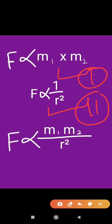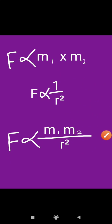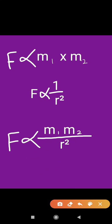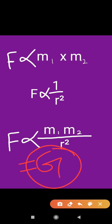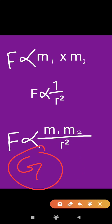When we combine equation one and two, we get F is proportional to M1·M2 upon R². As we know, whenever we remove a proportionality sign, we get an equals sign along with a constant. Most of the time we consider the constant K, but this time our constant will be G. This G is known as the gravitational constant or universal constant of gravitation.